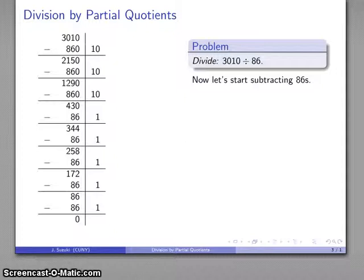My quotient is just going to be how many 86's I've subtracted all together, and that's going to be recorded in this column. So what is that? That's 10, 20, 30, 31, 32, 33, 34, 35 86's all together. And there's my quotient.